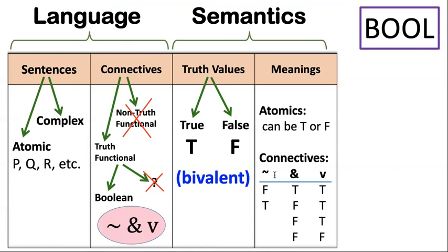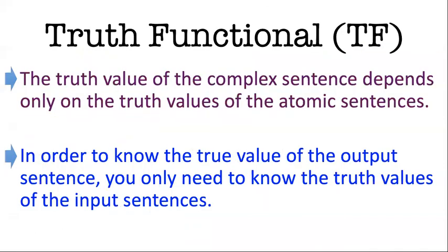Now the connectives are different. The connectives are what we're going to call truth functional. There's no fact of the matter that applies to the connective itself. Rather, the connective gets a truth value depending upon what it's operating on. Truth functional applies to complex sentences, and what it means is that the truth value of the complex sentence is determined by — or depends on — just the truth values of the input sentences, like the atomic sentences.